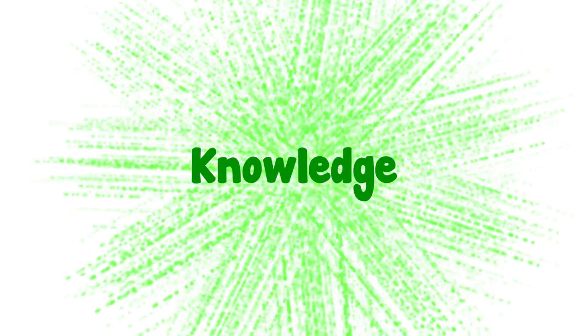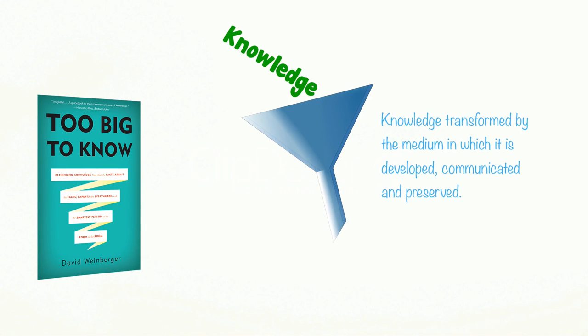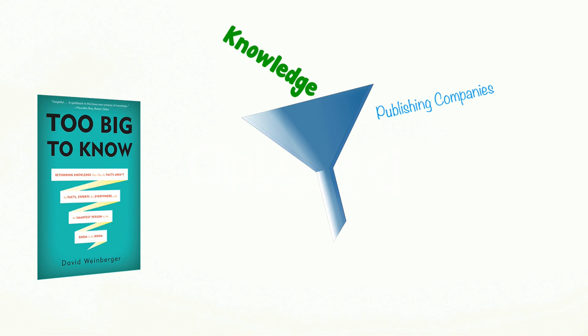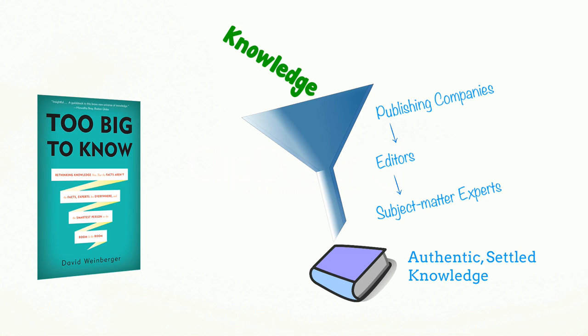When information becomes abundant, complexion of knowledge itself changes. In his book, Too Big to Know, David Weinberger explains that knowledge gets transformed by the medium in which it is developed, communicated, and preserved. In the world of atoms, where knowledge was created and preserved in books, publishing companies hired editors, who in turn discovered experts in different fields and approached them to write books and articles for magazines. This published knowledge, filtered by subject matter experts and editors, was then accepted as authentic and settled knowledge.